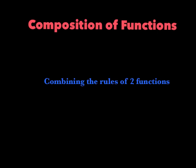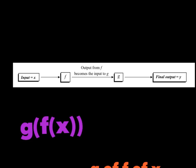Well hello and welcome back to our flipped classroom. Tonight's topic is called the composition of functions, so let's go ahead and get that titled in our notebook and put the date at the top as well. Here's our definition of composition of functions: combining the rules of two functions. Let's carefully copy this diagram down. We have our input x, an arrow to f, the output from f becomes the input to g, and then we have our final output. This is how a composition works.